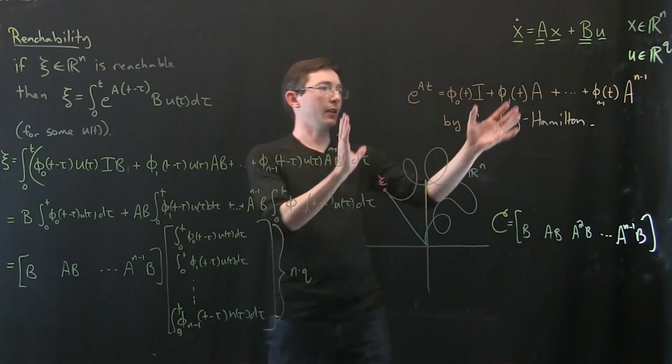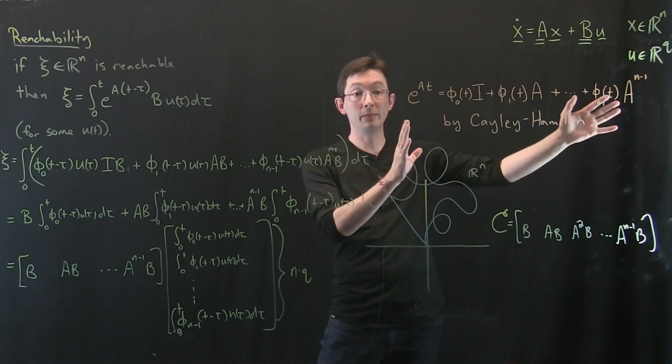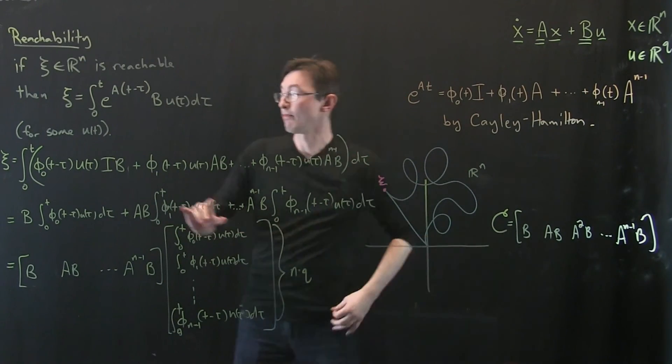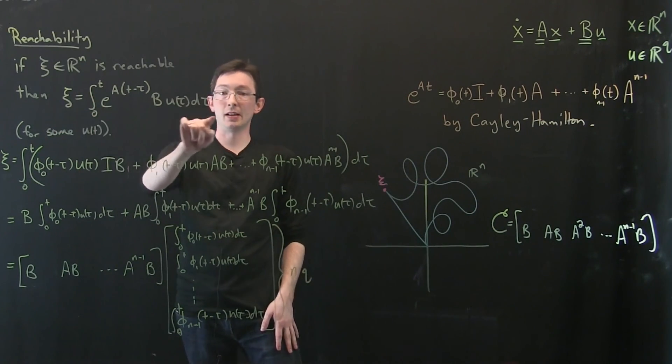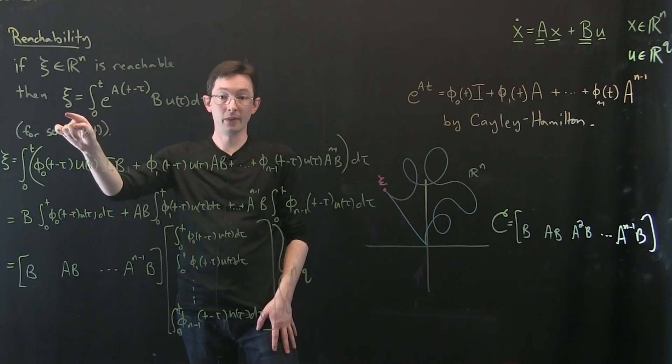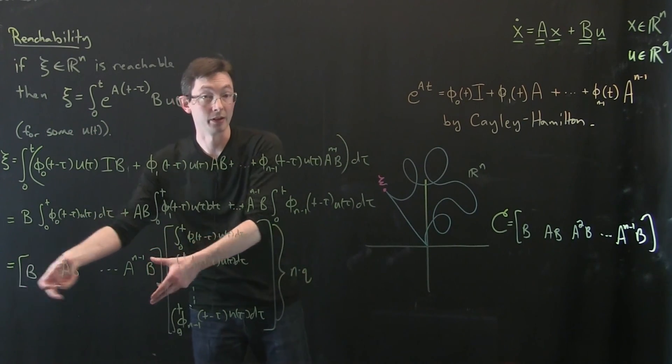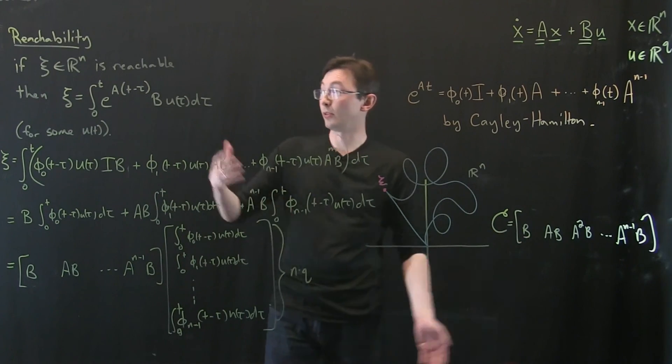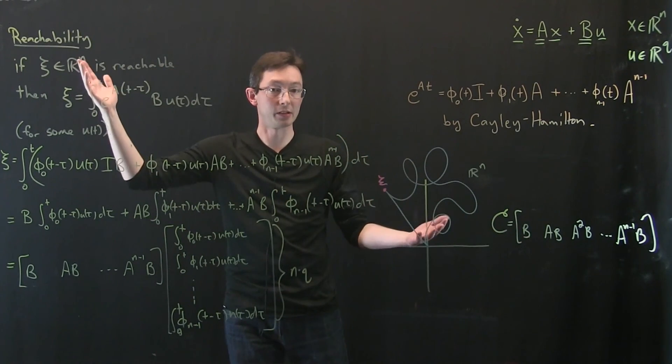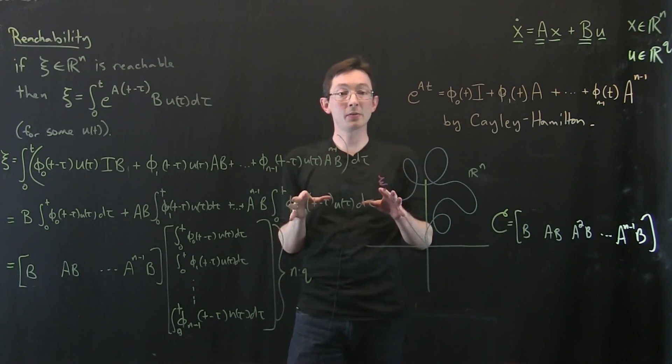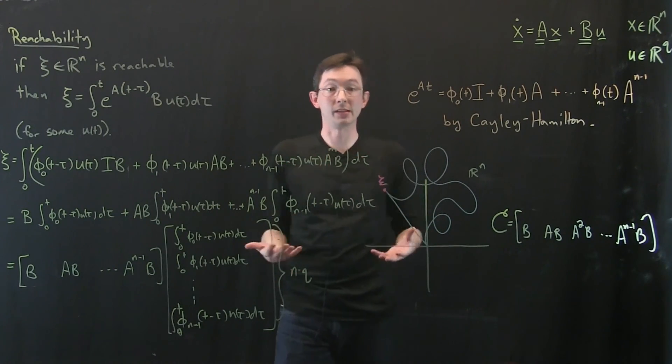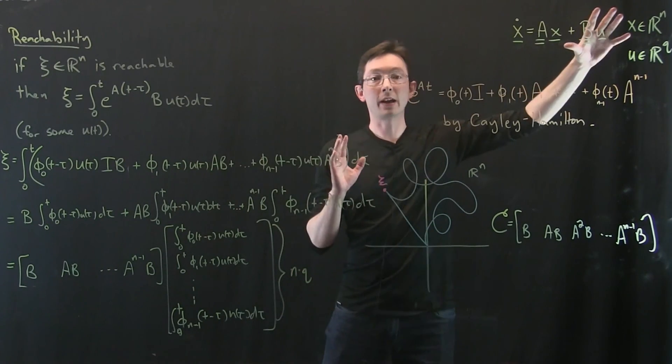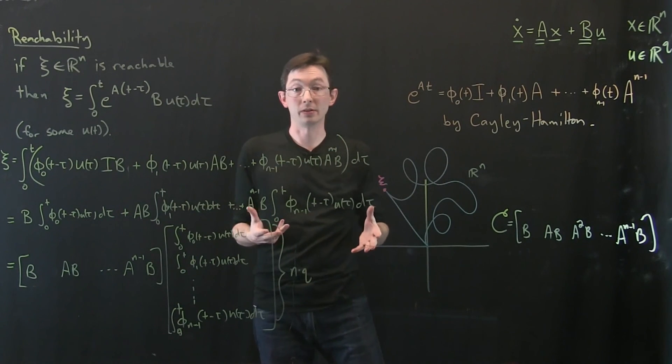Okay, but I just want to show you that first of all Cayley-Hamilton is extremely useful. It gives us a representation that allows us to write this convolution integral in terms of our controllability matrix. Okay, and then you can show that if the system is controllable, then it's reachable and vice versa. Okay, so next we're going to solve this on some actual examples. We're going to really look at if a system is controllable and then we're going to develop controllers.